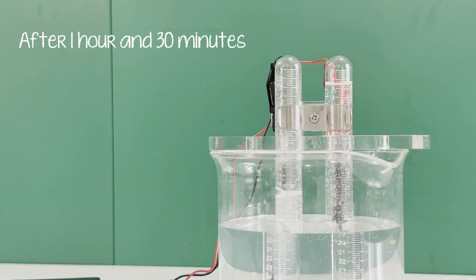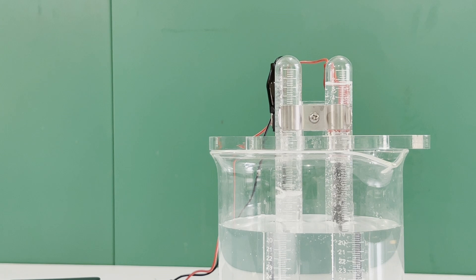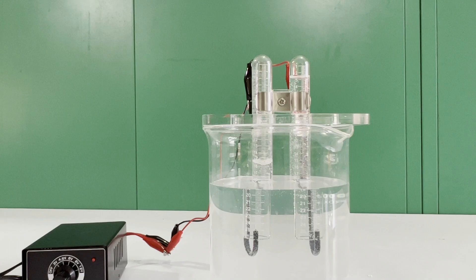1 hour and 30 minutes later, a column of air on the cathode is around 15 ml. Once we have a significant amount of gas, unplug the power source and test the gases.